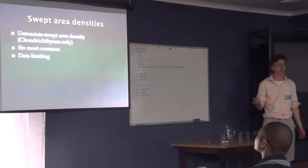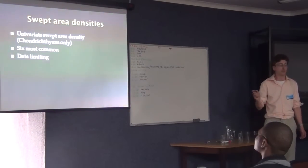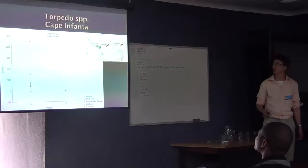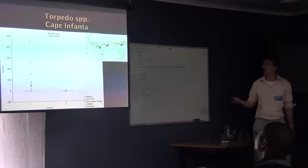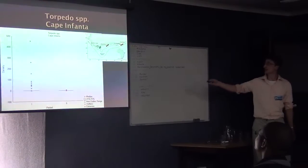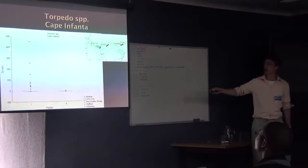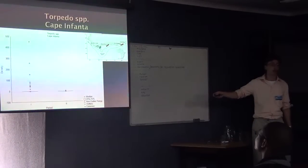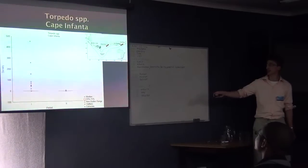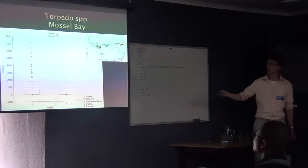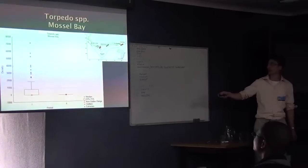Swept area densities: this is probably what most people are interested in. These are the baseline values. I have concentrated only on the chondrichthyans, and I chose the six most common because data was limiting. I'll start with torpedo. Not super common on the Cape Infanta ground in the historical surveys, but a significant decline. This is in Mossel Bay: more dominant on the Mossel Bay ground, but again, a significant decline.